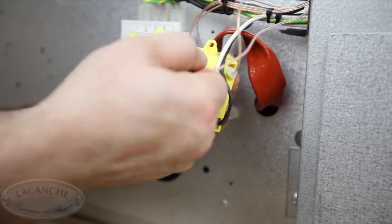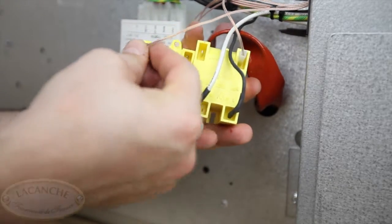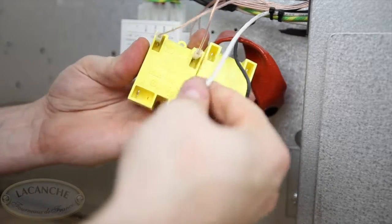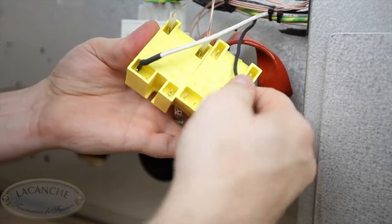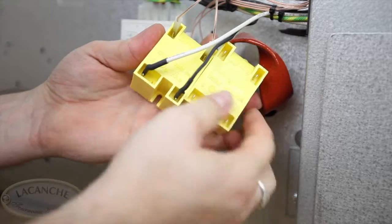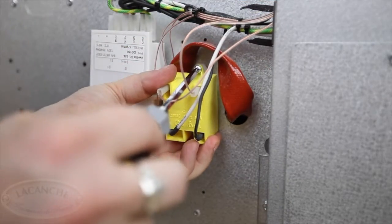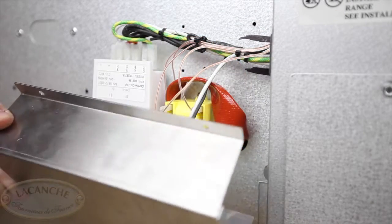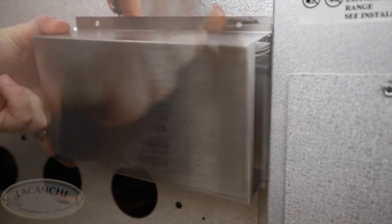Move the terminal wire connections one at a time from the old module to the new one. Replace the electrical panel cover box and move the range back into position.